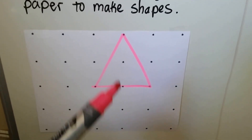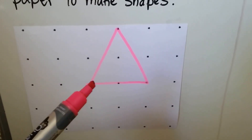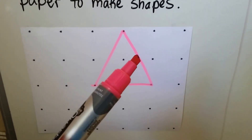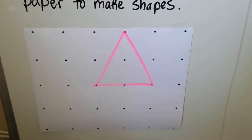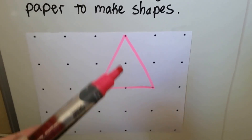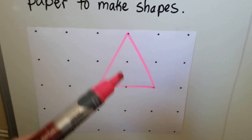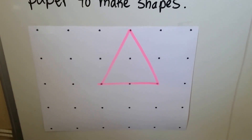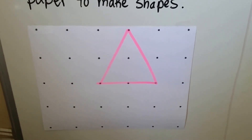The triangle has one, two, three corners, and one, two, three sides. They're not always the same size. Sometimes these two sides are longer and this one's shorter, but it's still a triangle because it has three corners and three sides.